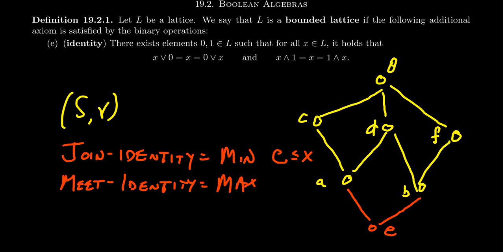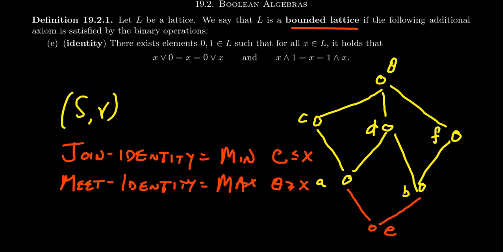The element theta, which is at the top of the lattice, is greater than every element X and is the meet identity. If you take any element X and meet it with theta, since theta is bigger than X, this equals X. So the presence of identities inside a lattice — whether a join identity or a meet identity — relates to the partial order. The join identity will be the minimal element of the lattice, and the meet identity will be the maximum element of the lattice.